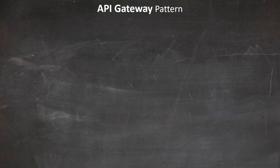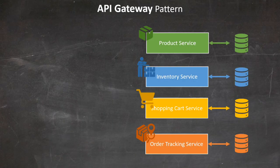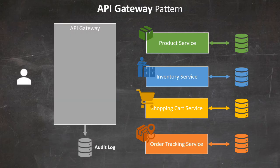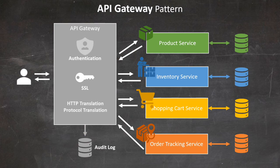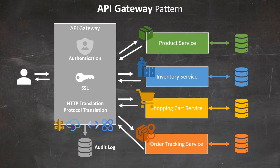Let's now apply this pattern to our e-commerce solution. It starts with the clients of our microservice solution. The API Gateway intercepts all incoming API calls from clients and routes them to the appropriate microservices before aggregating the responses and returning them to the client. Within the Gateway, we can take care of authentication, secret management, and HTTP and protocol translations. For implementation options, you can look at AWS API Gateway, Azure API Management, or Google Cloud Endpoints and Apigee Edge.